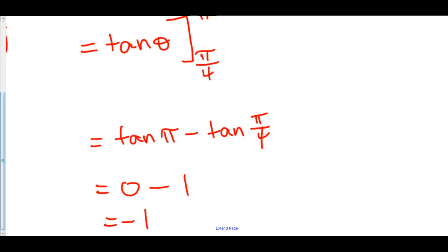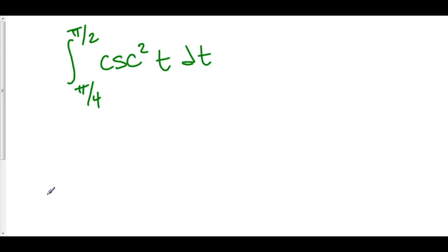I'll do one more. Once again, we'll just use our trigonometric formulas from derivatives. Here we've got the integral from π/4 to π/2 of cosecant squared t dt. Now we've got to find the antiderivative of cosecant squared.